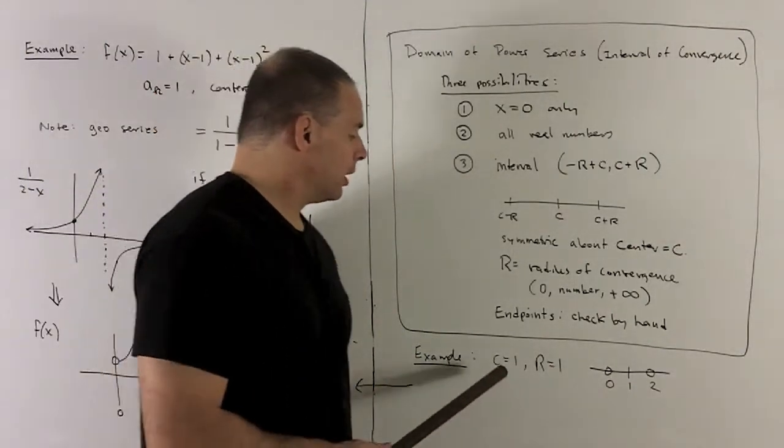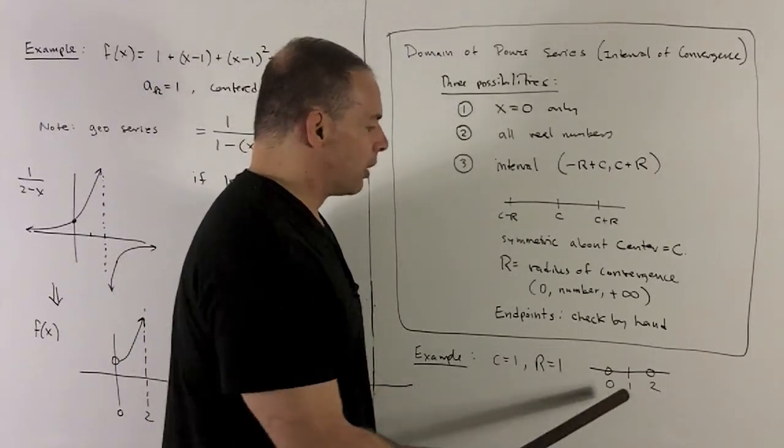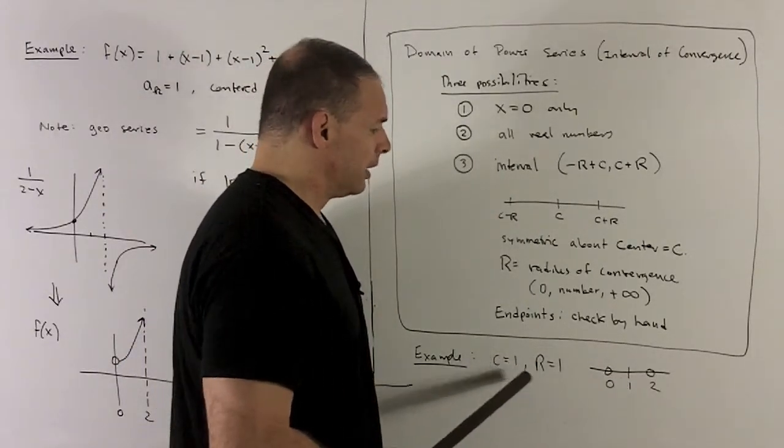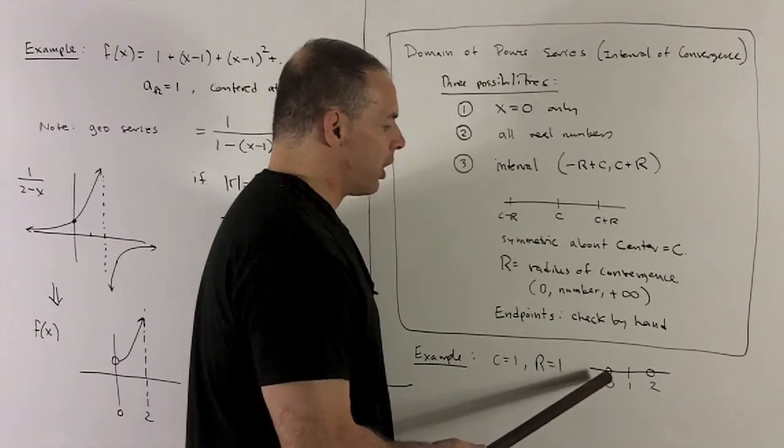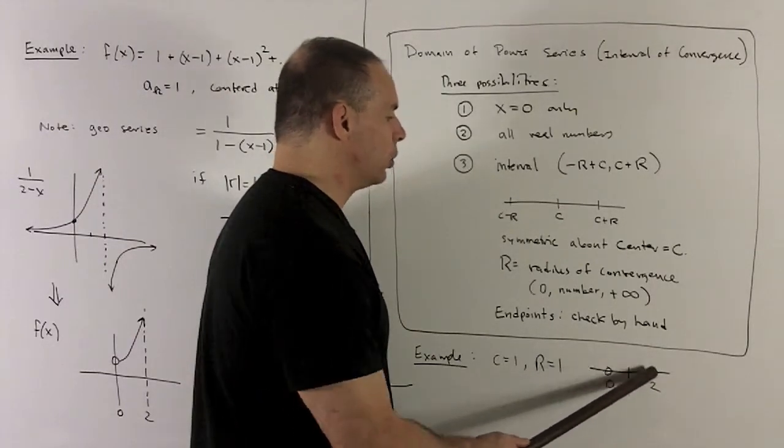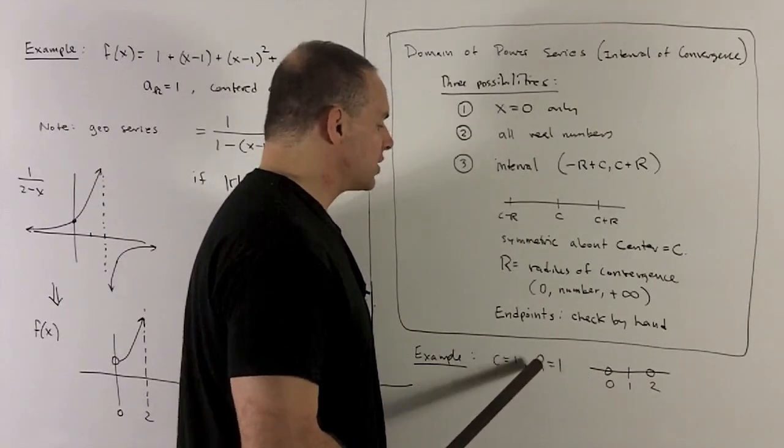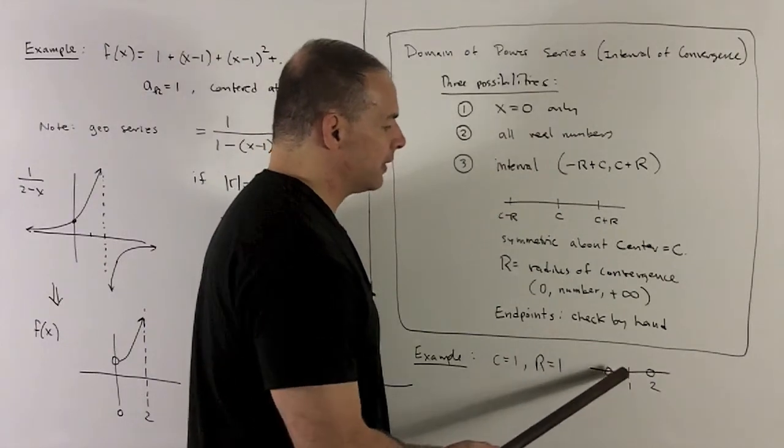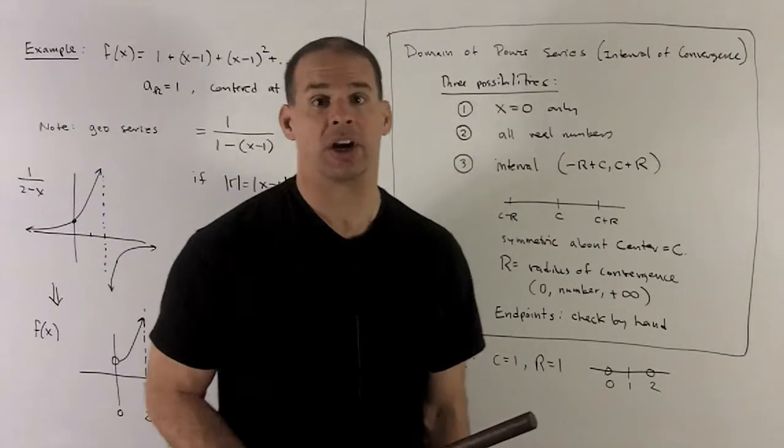In my example, the center was at one. So, I'll mark off a one. And then, we knew that our interval of convergence was going from zero to two, not including the endpoints. So, the radius of convergence is going to be equal to one. That's just the distance you can go in each direction from our center.